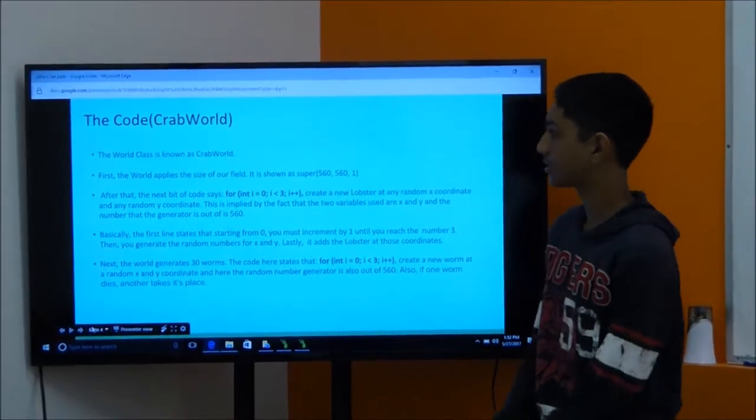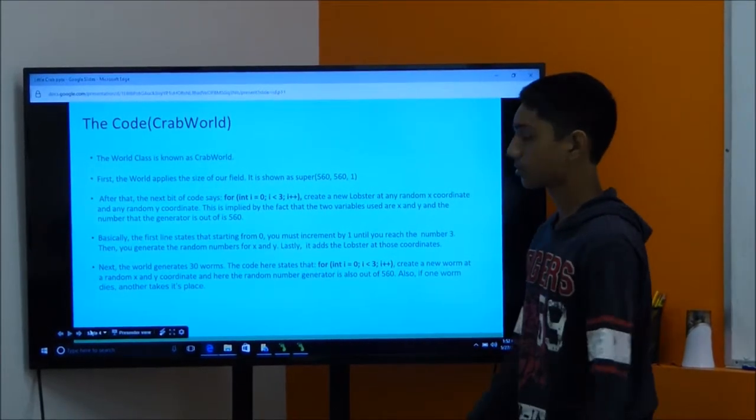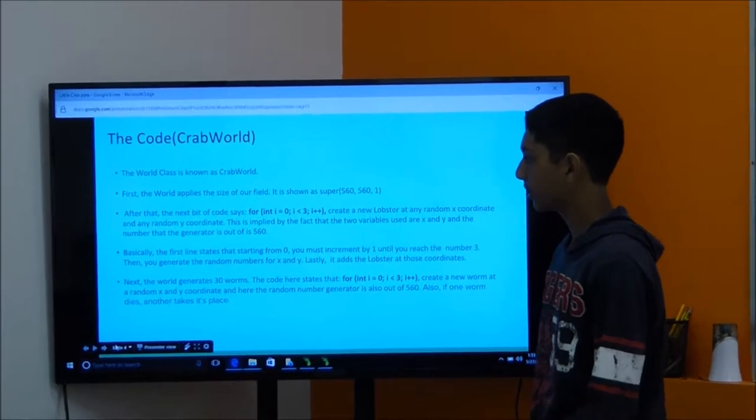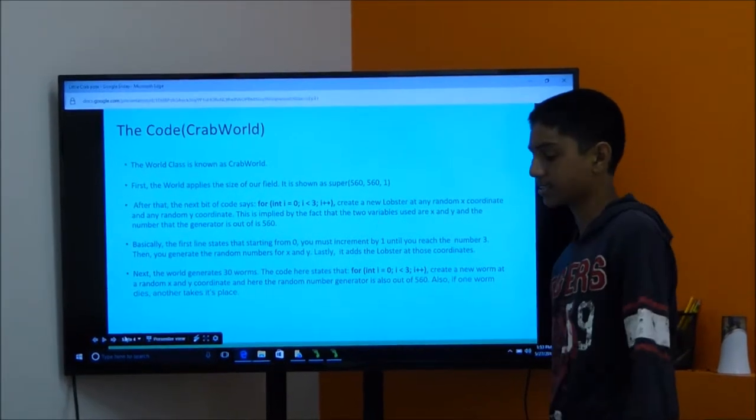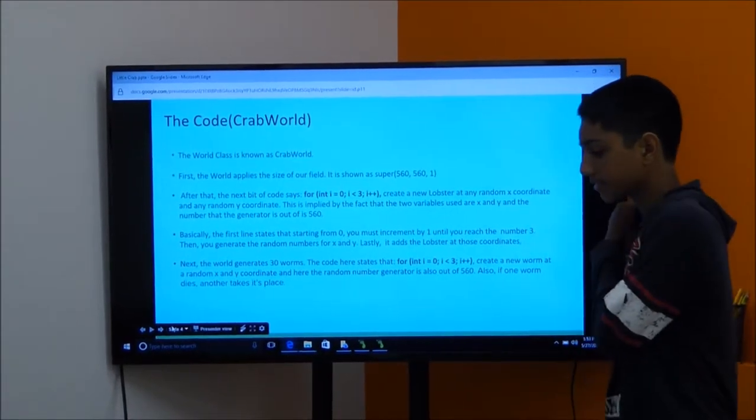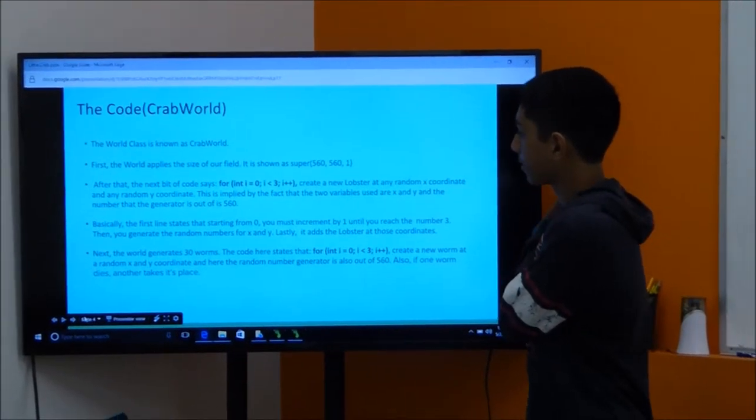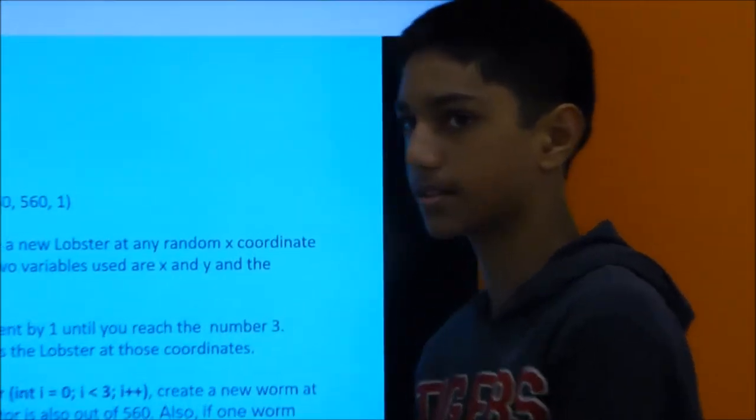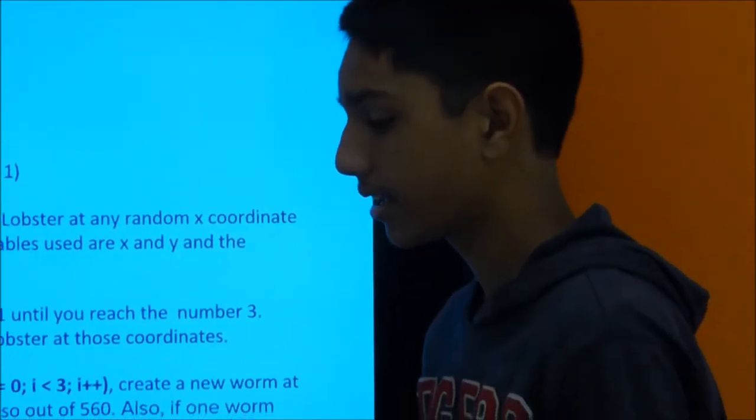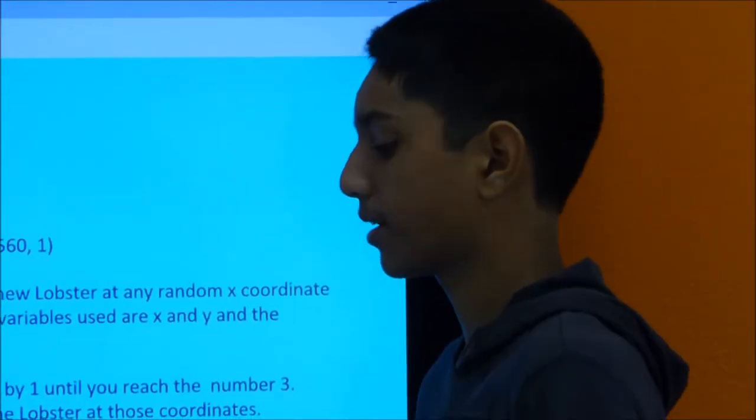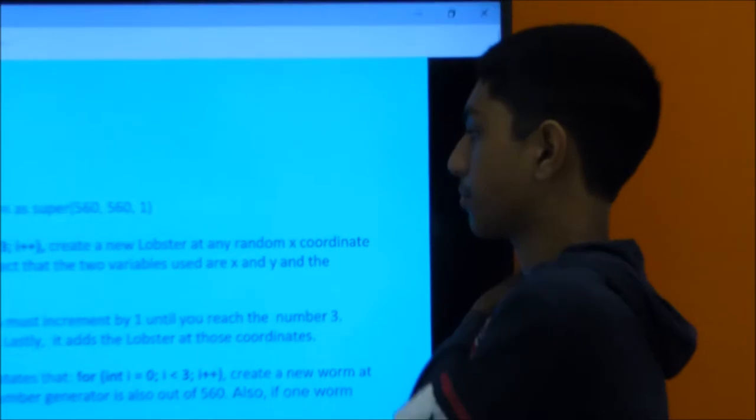So now the code. The world class is known as crab world, and it first applies the size of the entire playing field, which is 560 by 560 grid. And the next bit of code basically generates the three lobsters at the beginning at random x-coordinates and random y-coordinates using random number generators.